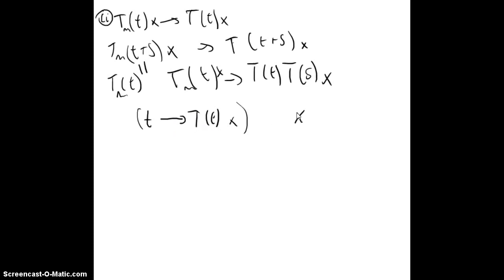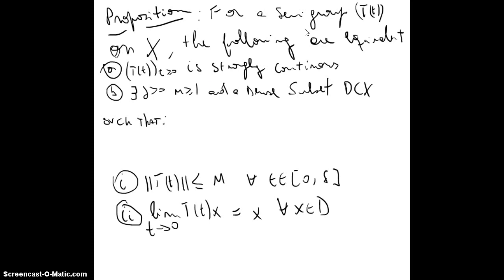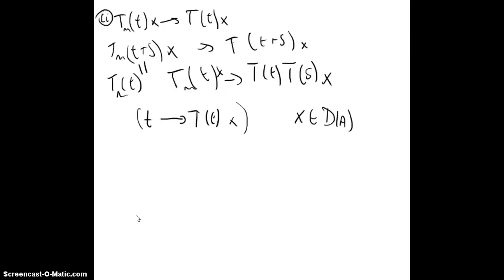This is for x in the domain of A. Then using the following proposition that says that for a semigroup T(t), the following are equivalent: that is strongly continuous, or that we have a delta and m greater than one, t in subset such that the norm of T(t) is less than equal to m, and the limit when t goes to zero of T(t)x, it checks for x in the dense subset. So this means that T(t) is a C0 semigroup.